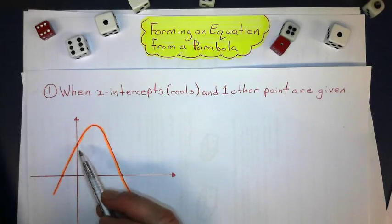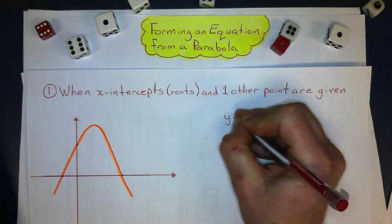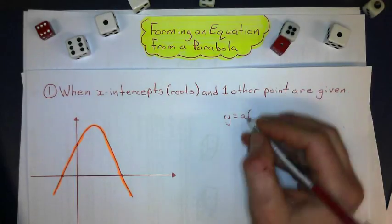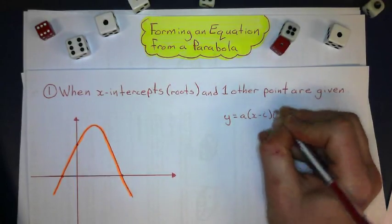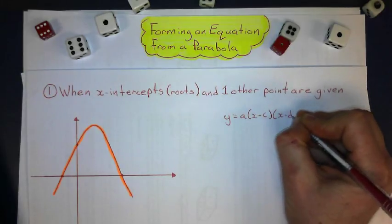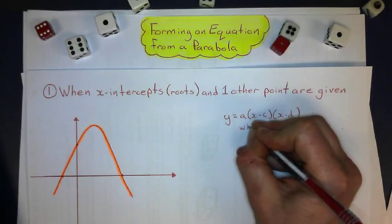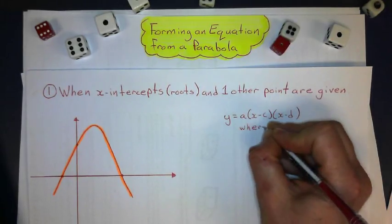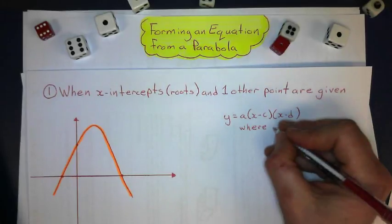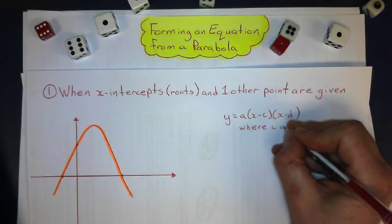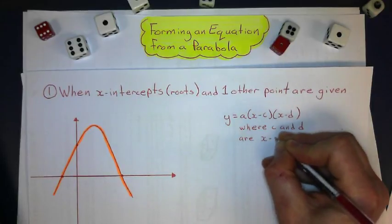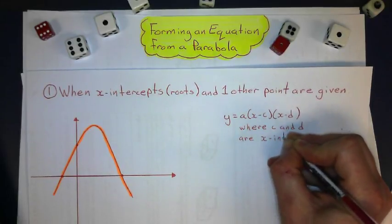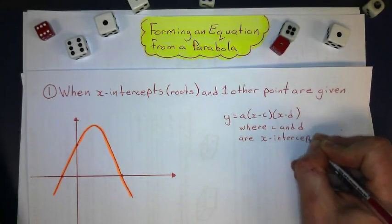In this case, that one other point is the y-intercept. So if that's the case, we're going to use the general form of y equals a times brackets x minus c, times x minus d, where c and d are the x-intercepts, or the roots.